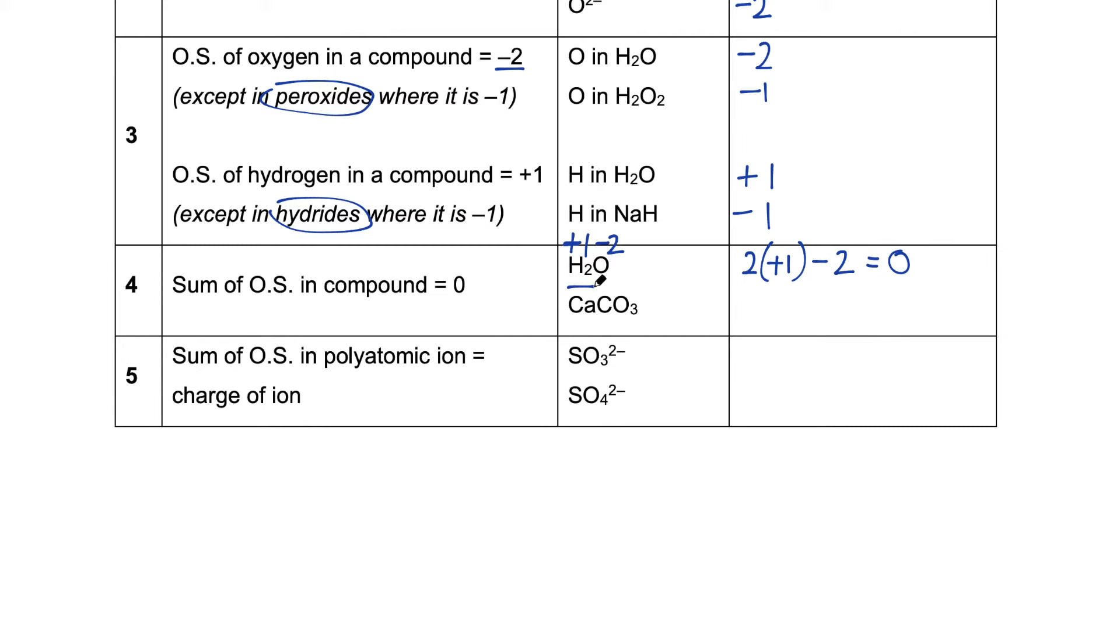In calcium carbonate, this is the Ca2 plus ion. Therefore, the oxidation state follows the charge, plus two. The oxidation state of carbon here is plus four. And because we have three oxygen, they sum up to being zero.